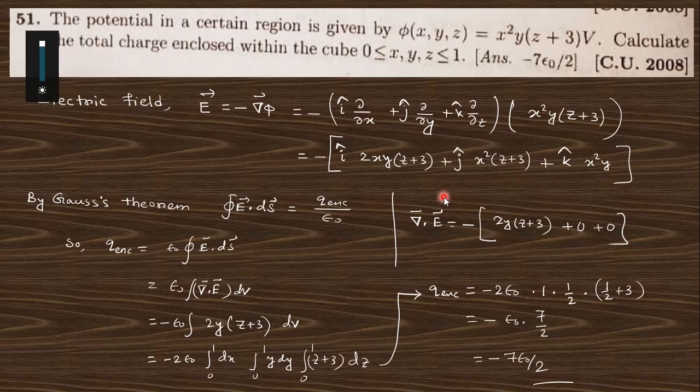Using Gauss theorem, ∮E·ds = Q_enc/ε₀. You can use the divergence theorem of vector analysis, the closed surface integral can be written as ∫∇·E dV. You can find the divergence of E, and integrate over this region, the cube where x, y, z vary from 0 to 1. If you put this value you will get the answer.